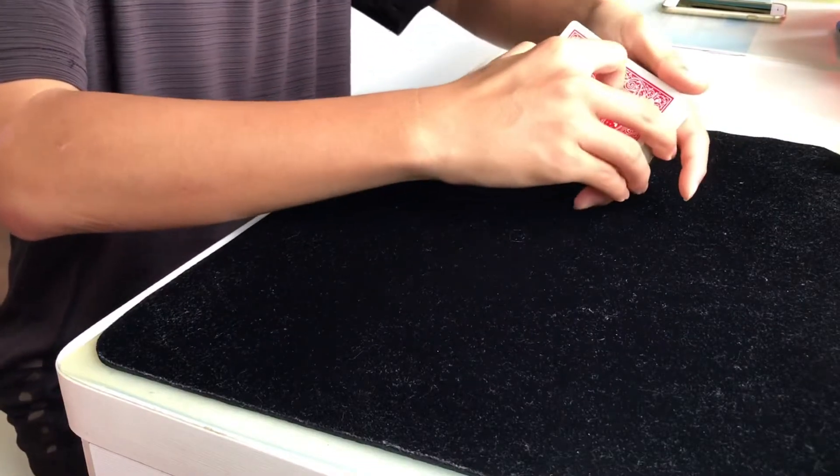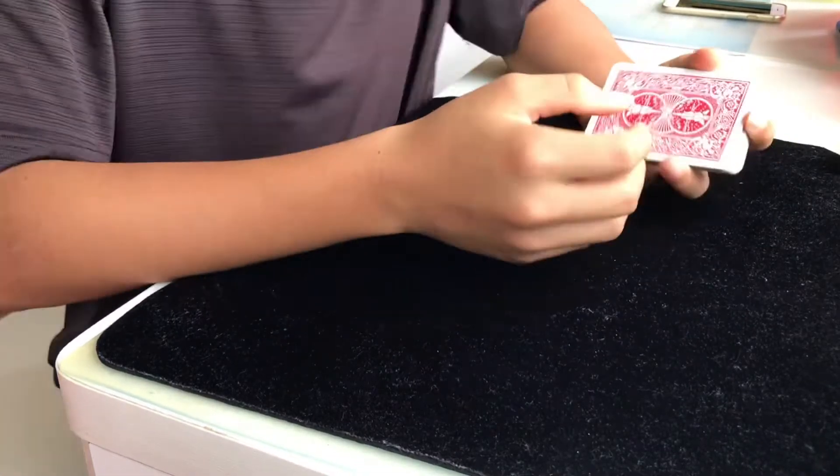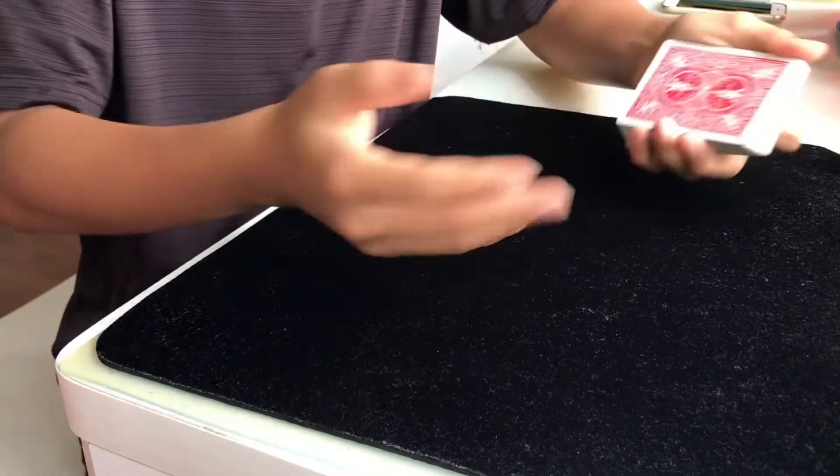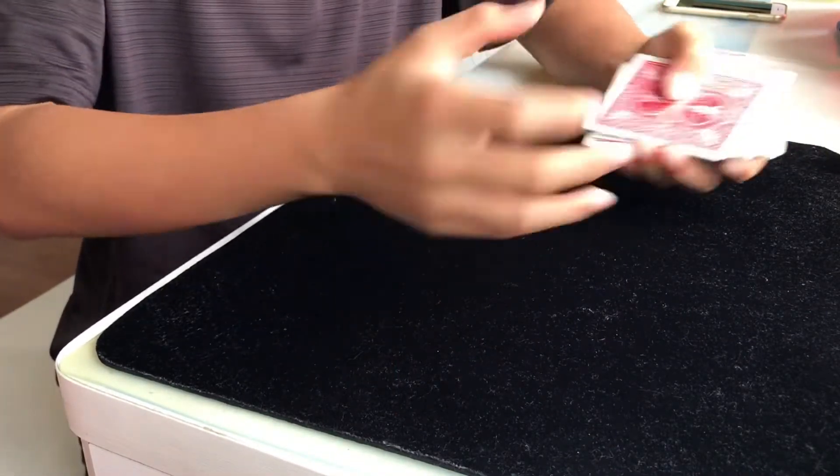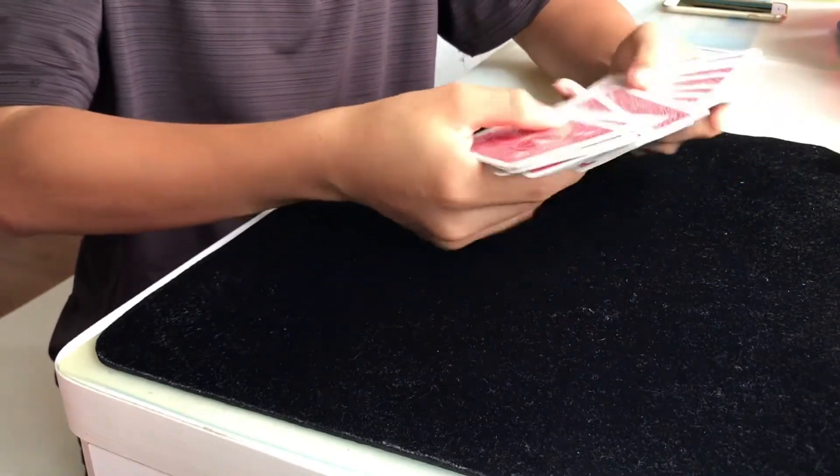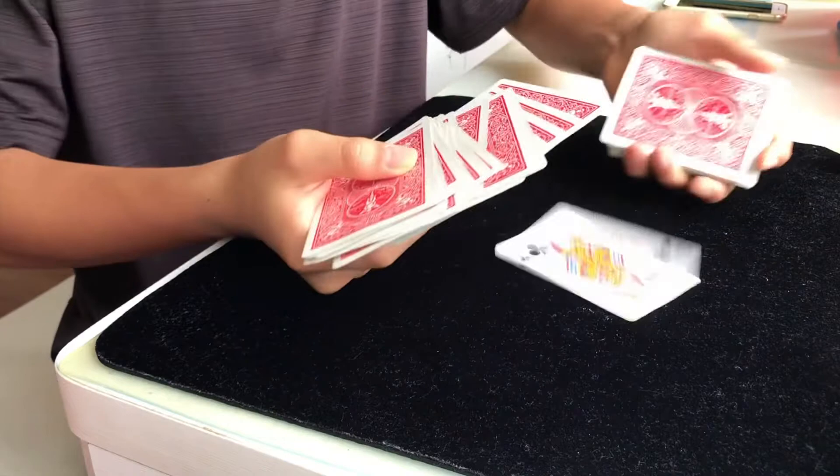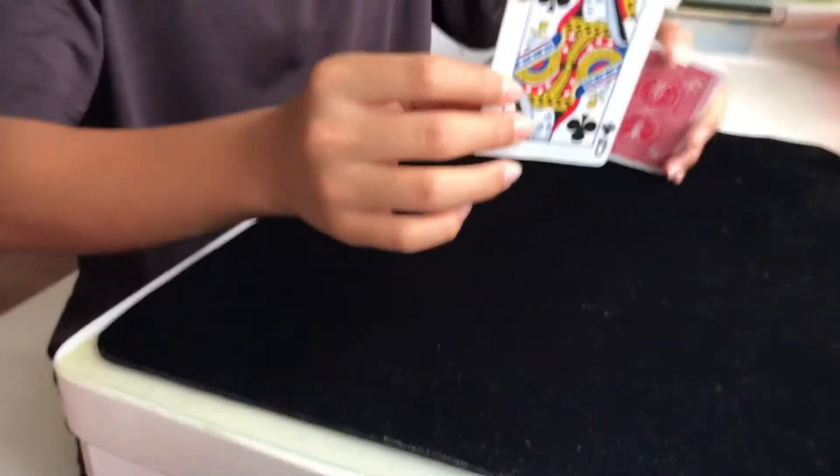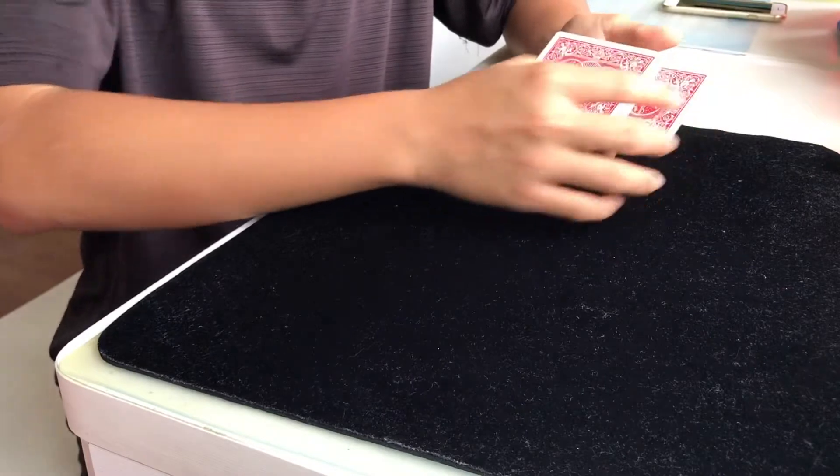Today we're going to be learning something different. This is an easy card trick you can do anywhere with any deck of cards. Let's start. We get a card selected, let's say it's this one for example, it's the Queen of Clubs. The Queen goes somewhere into the deck.